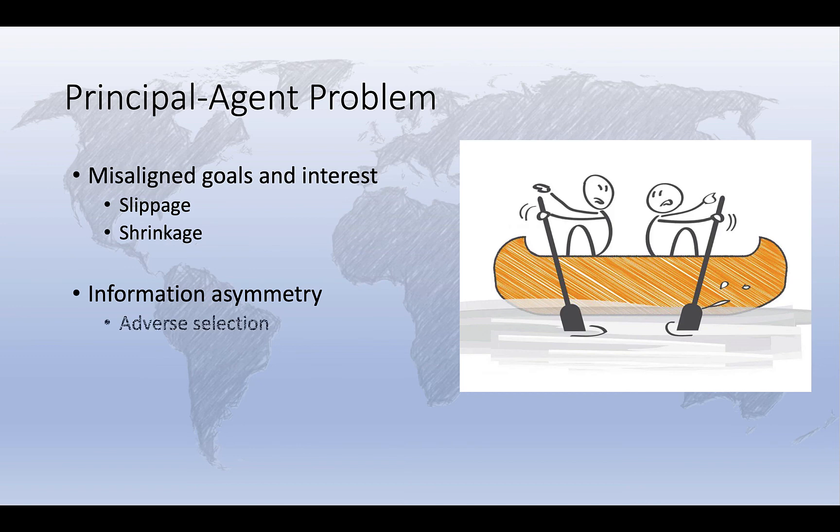Relatedly, it can create problems of adverse selection, where the agent may be actively trying to conceal information from the principal. All of these represent challenges emerging from the principal agent problem.